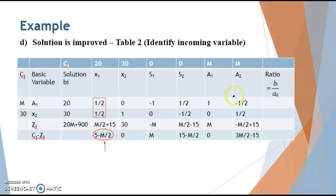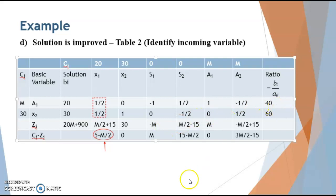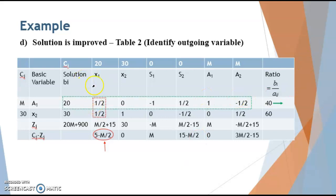So this is the incoming variable. Calculate the ratios: 20 divided by one-half is 40, and 30 divided by one-half is 60. The least positive ratio is 40, so that is the outgoing variable. Now x1 enters the basic variable column and a1 exits the table. Repeat the entire process: x1 enters with its coefficient 20, the key row is divided by the key element one-half, and the remaining values are computed using the formula.